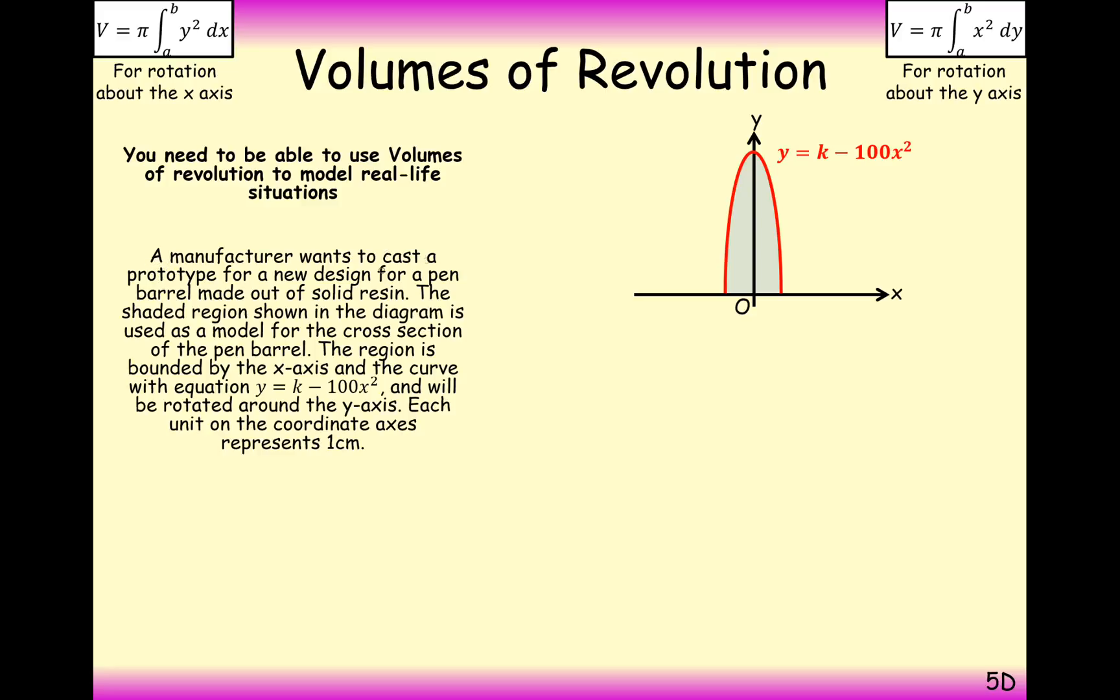A manufacturer wants to cast a prototype for a new design for a pen barrel made of solid resin. The shaded region shows the diagram used in the cross section of the pen barrel. The region is bounded by the x-axis and the curve of the equation y equals k minus 100x squared and will be rotated around the y-axis. Each unit corresponds to one centimeter.